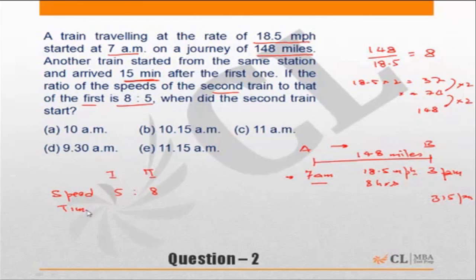Which means the ratio of the time should be 8 is to 5 for train 1 to train 2. Which means if the first train has taken 8 hours, the second train should have taken 5 hours.